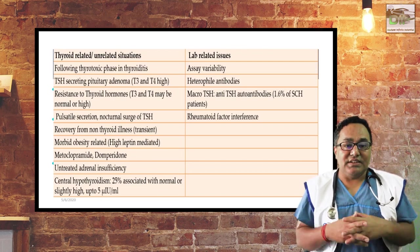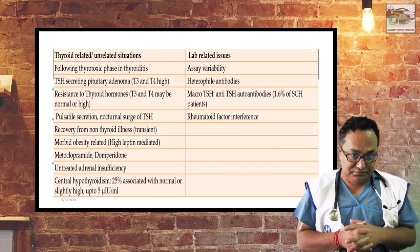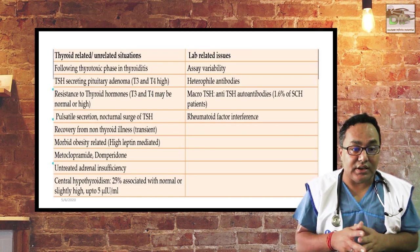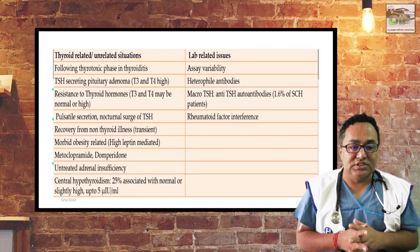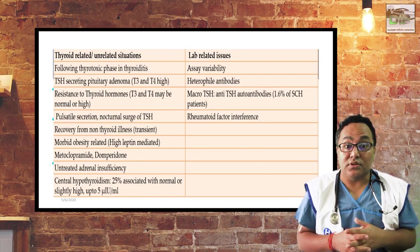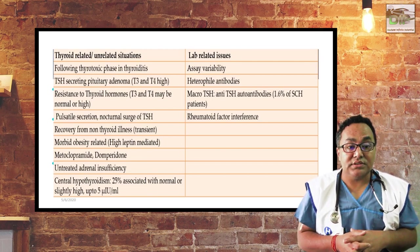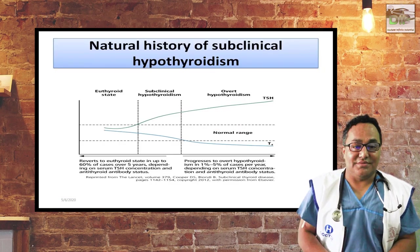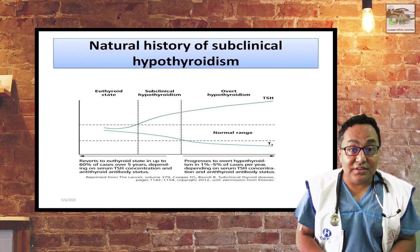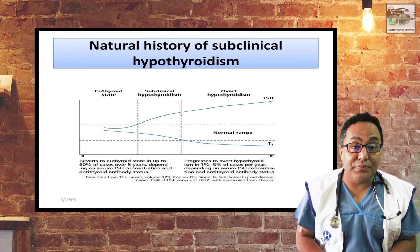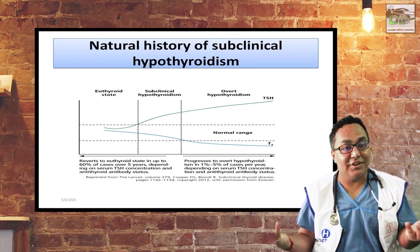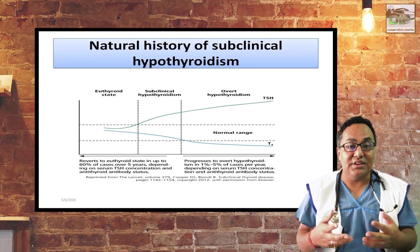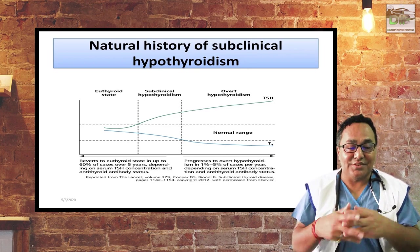A patient can have high TSH due to heterophile antibodies, TSH variability, following thyrotoxic phase in thyroiditis, and various listed diseases. Morbidly obese patients also have high TSH due to leptin-mediated effects. Regarding natural history, subclinical hypothyroidism refers to euthyroid status in 60% of patients depending on TSH level, so they do not require treatment. However, 1–5% of patients may develop primary hypothyroidism, which is why it is necessary to monitor.